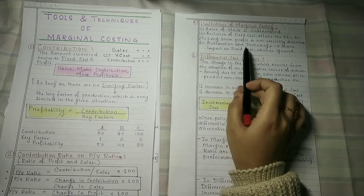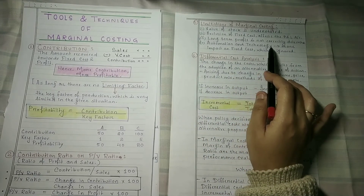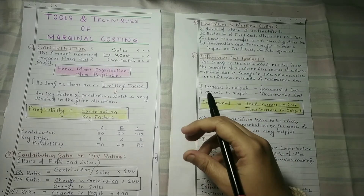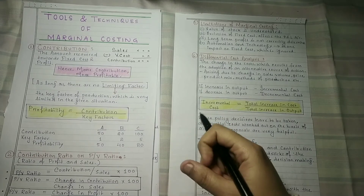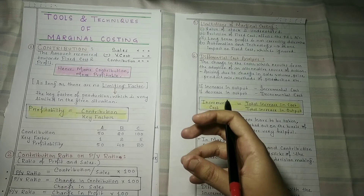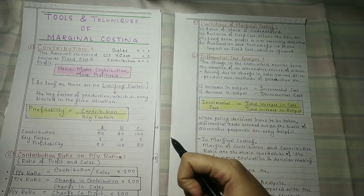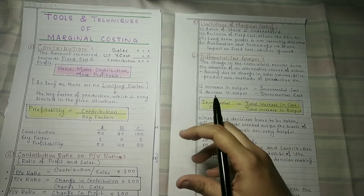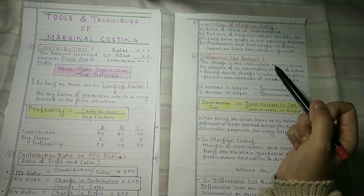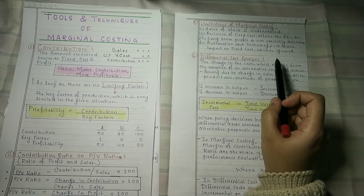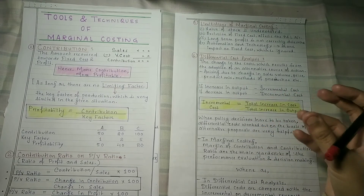Another very important and practical limitation is that automation and technology involved in a business carries a very heavy amount of fixed cost — such as setting up a new machine or introducing new technology into your business. That is a fixed cost, but since we completely ignore fixed cost in marginal costing, this has a huge impact on our total costing.